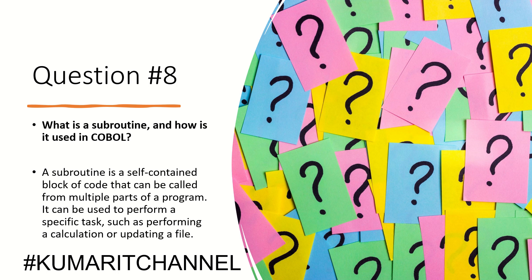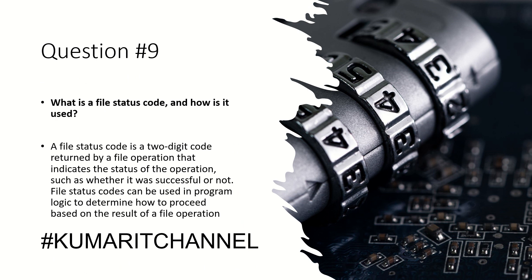For example, in a student data management project: a subroutine could be used to calculate a student's GPA based on their grades in multiple classes. This subroutine could be called from multiple parts of the program, such as when displaying a student's transcript or calculating scholarship eligibility. Essentially, a subroutine is reusable code.